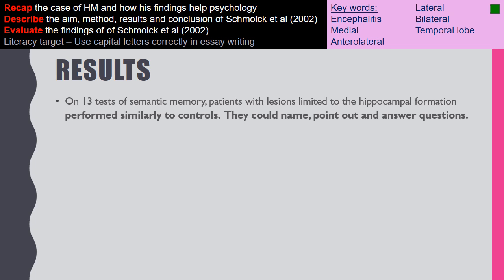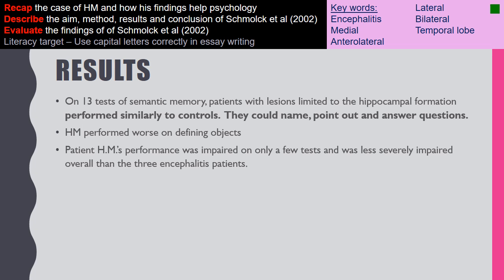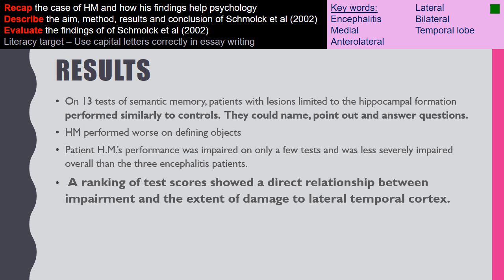After participants completed the semantic memory tests, Schmollock found that patients with lesions limited to the hippocampus performed similarly to the control group — they could name, point out, and answer questions — suggesting the hippocampus is not playing a role in semantic memory. HM performed worse, specifically on tasks asking him to define objects, but was actually less impaired than the three encephalitis patients. A ranking of test scores showed a direct relationship between impairment and the extent of damage to the lateral temporal cortex, suggesting it plays a key role in semantic memory.